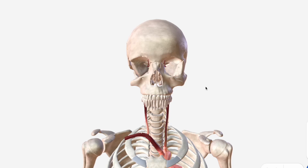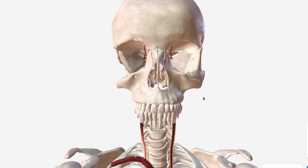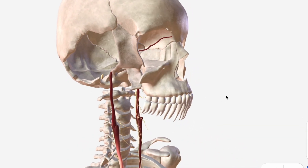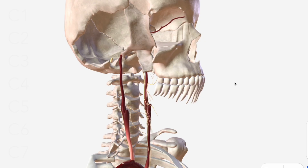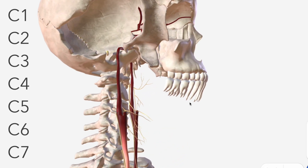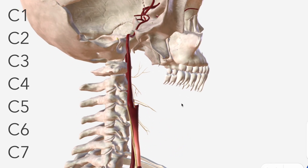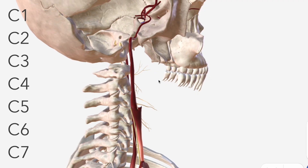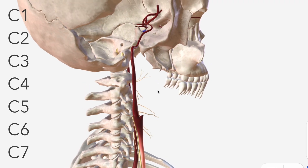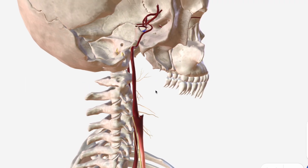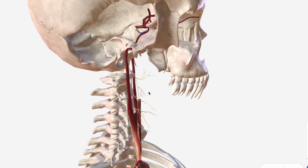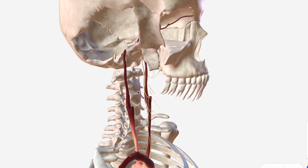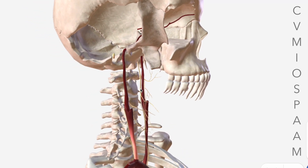Welcome to our video on the anatomy of the internal carotid artery. We'll be talking about the ICA in terms of seven different segments, a fairly typical way to understand its anatomy. Some of these segments have branches, and we can remember these with the mnemonic: calm voices make intraoperative sex pleasurable and almost memorable.